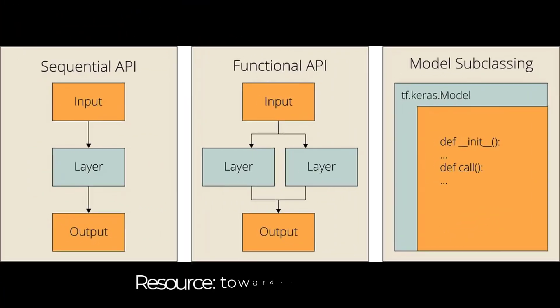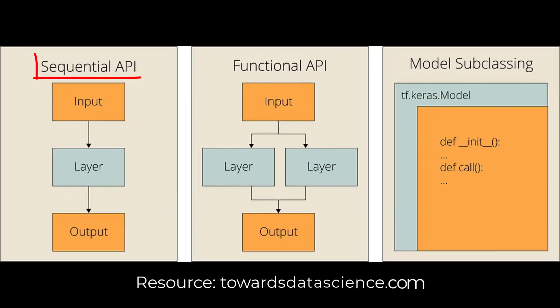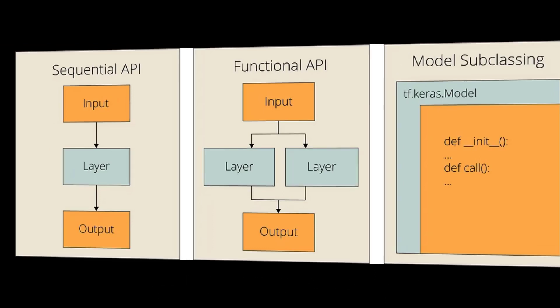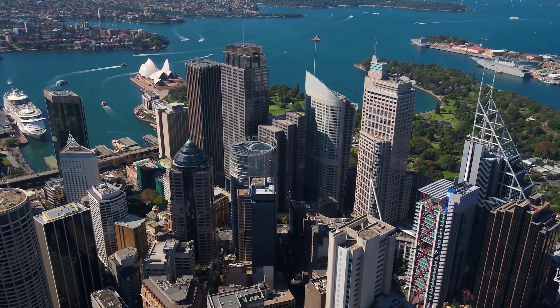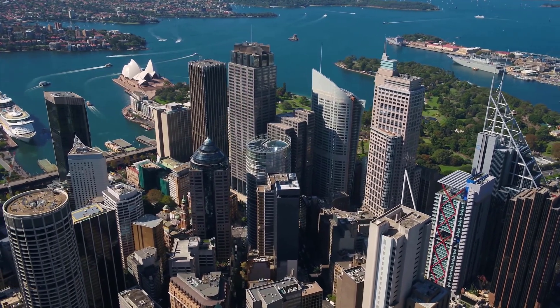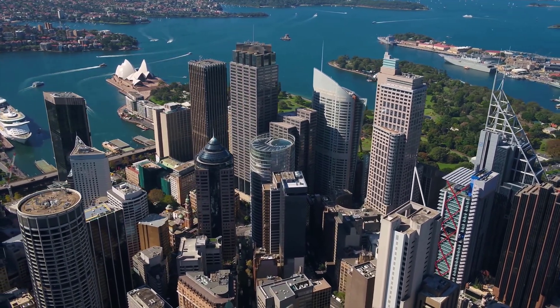You can easily build a deep learning model with the Keras Sequential API or Functional API. But it is difficult to create complex models with these methods. To build flexible models, it's a better idea to use the subclassing API. To show this, let's handle a regression problem using the California Housing Dataset.